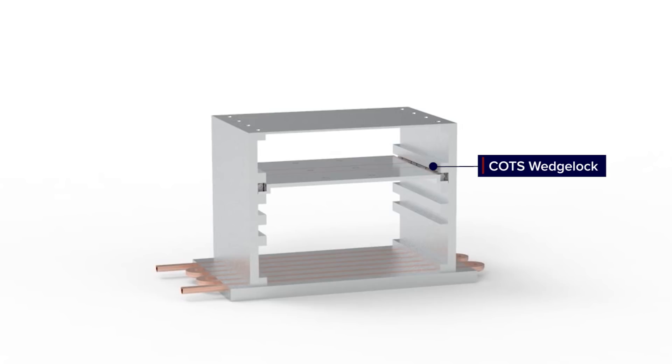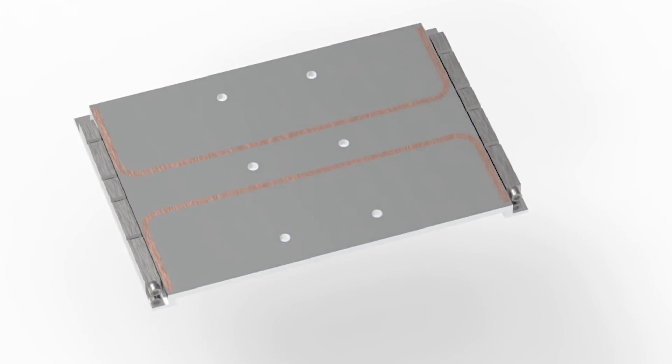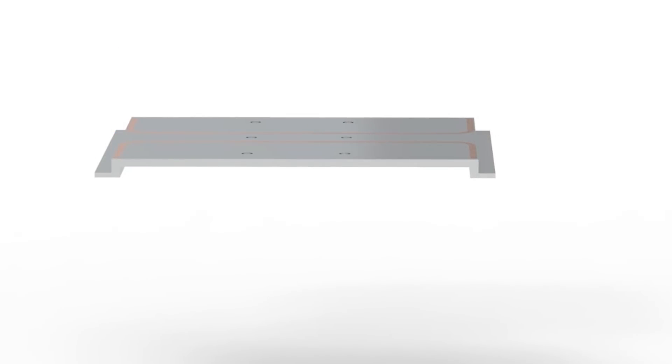The next area for thermal enhancement is at the frame-to-chassis interface. Off-the-shelf wedge locks provide mechanical attachment, but are not efficient heat transfer devices. Due to limited surface area and poor thermal path through metal-to-metal interfaces, the overall delta T is pretty significant for a short conduction path.